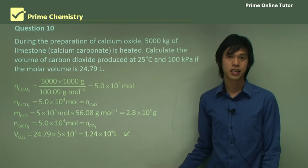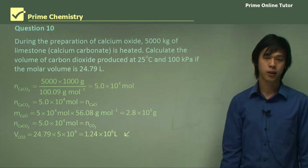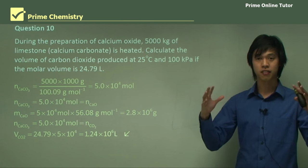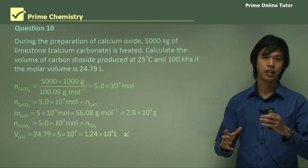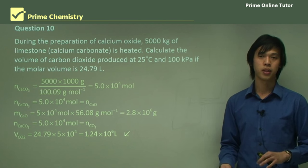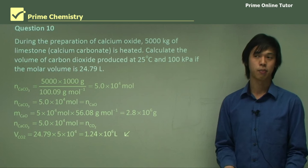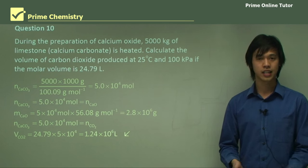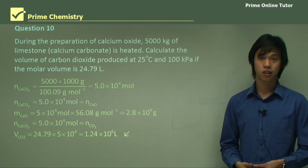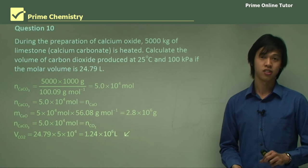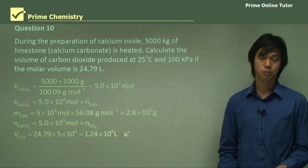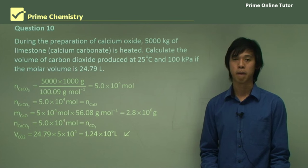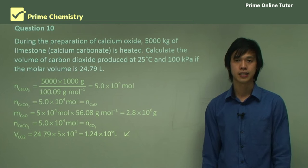That wraps up today's lesson on the Solvay process. We looked at what each part of the process does and how it interacts with the other parts to form the sodium carbonate we want. In the next lesson we'll look at the environmental issues associated with this process and how we can mitigate them. I look forward to seeing you at our next lesson.